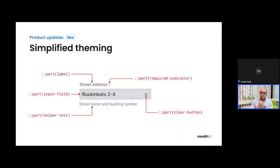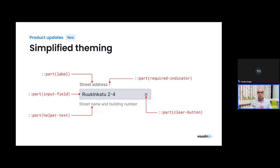Another addition in Vaadin 24 is a simplified theming approach based on the part selector. As you may know, Vaadin components employ an HTML feature called the Shadow DOM, which has the advantage of isolating component internals from the surrounding page to avoid styling conflicts. The downside has traditionally been that styling those internals is quite challenging. But now with the part selector, the internals of Vaadin components can be easily targeted for styling, removing the need for component-specific style sheets.